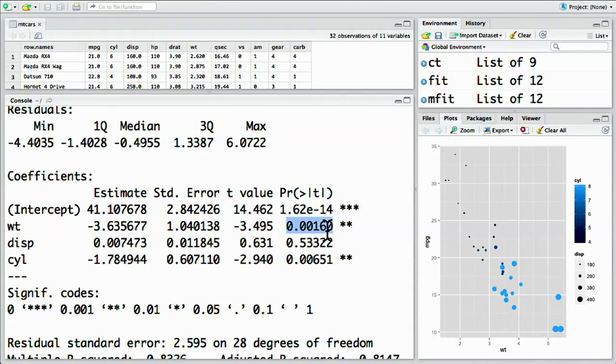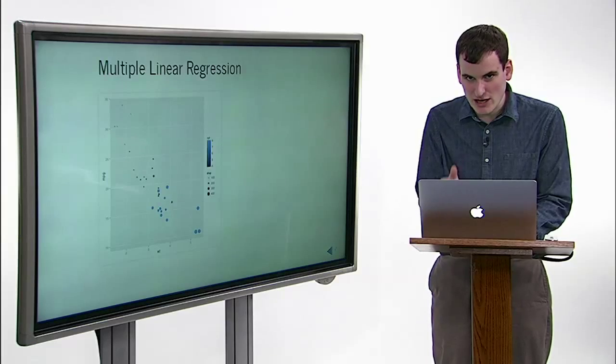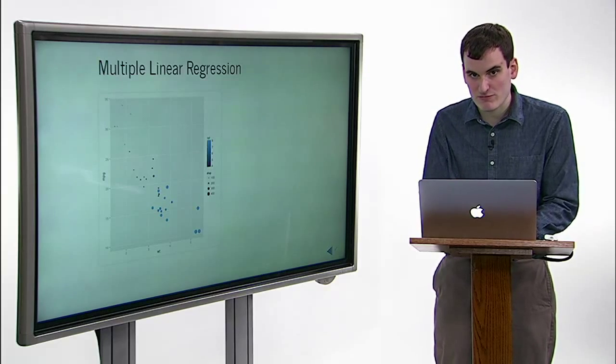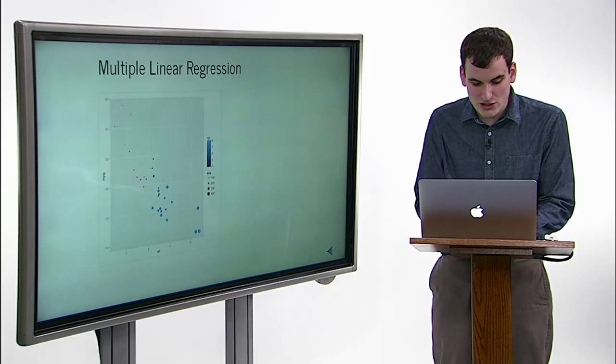Notice the p-values for weight and the number of cylinders are significant. We can see the significance rating based on the number of stars here. It represents between 0.001 and 0.01. But the significance for displacement is not significant. That means the volume of the engine is redundant with one or both of the other predictors, so it provides no additional information.